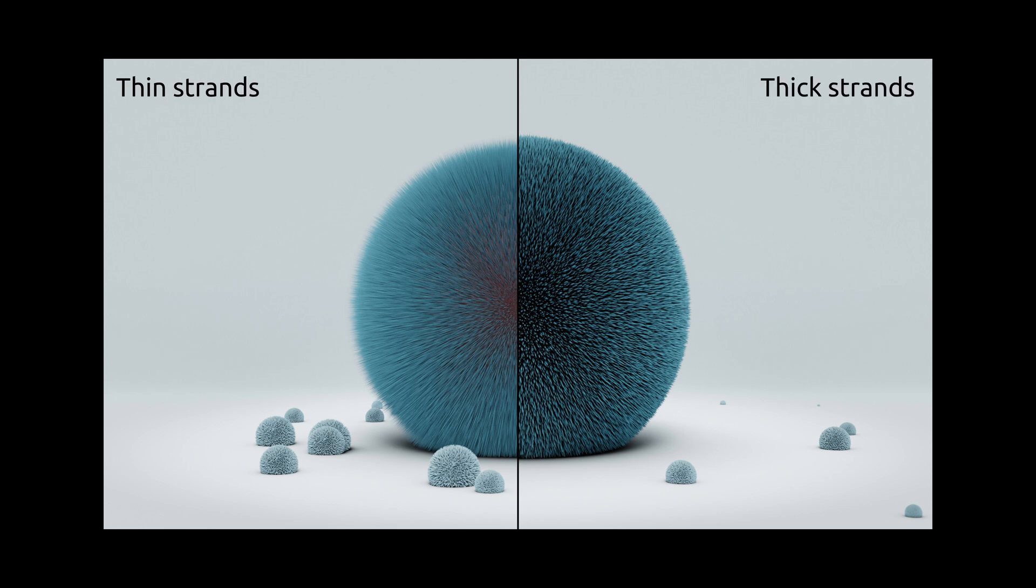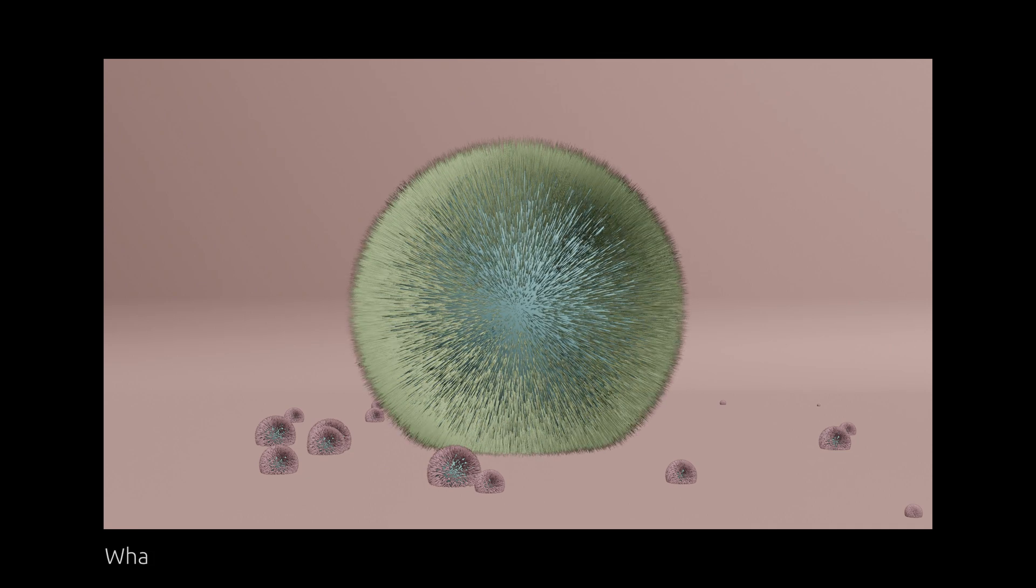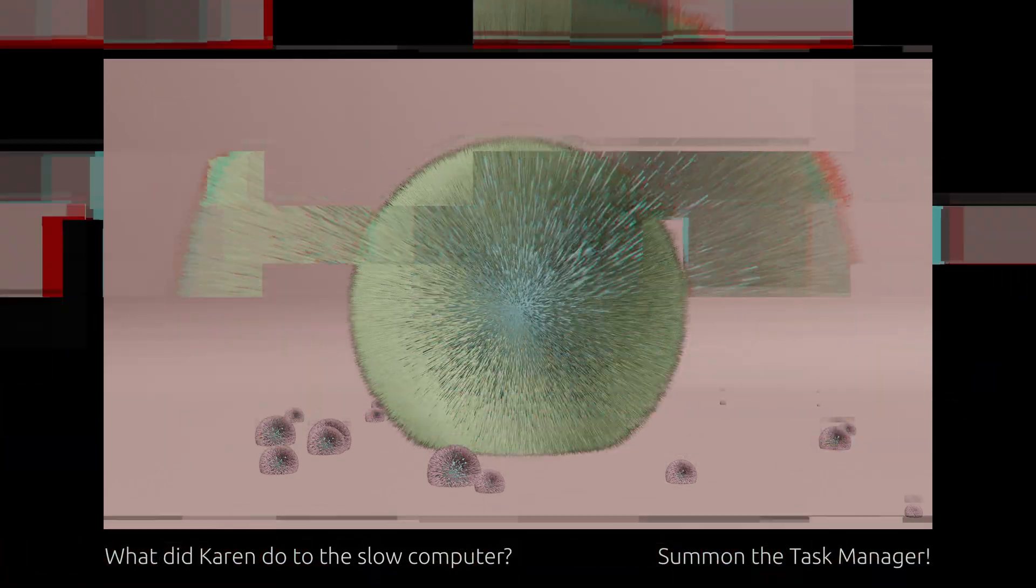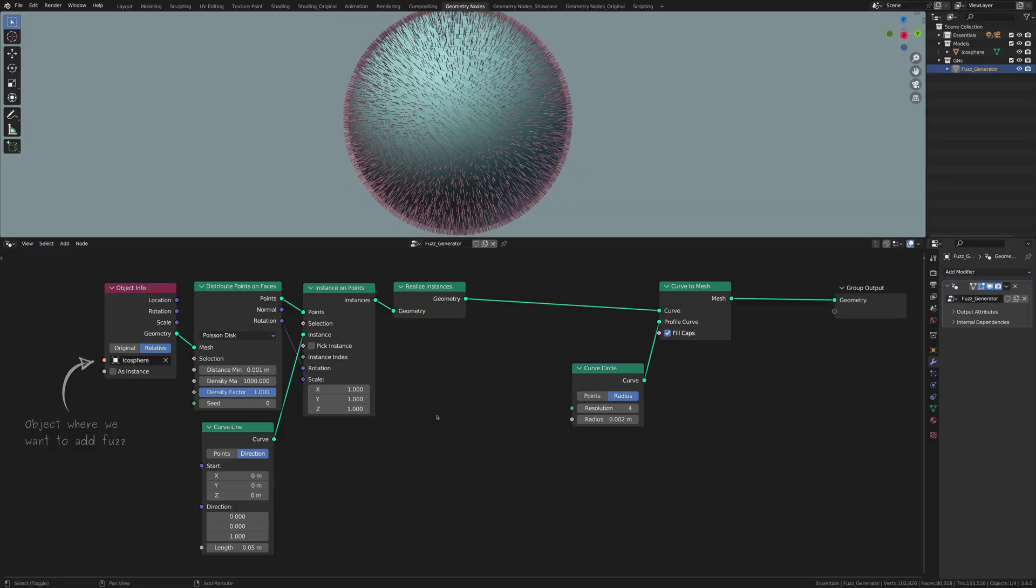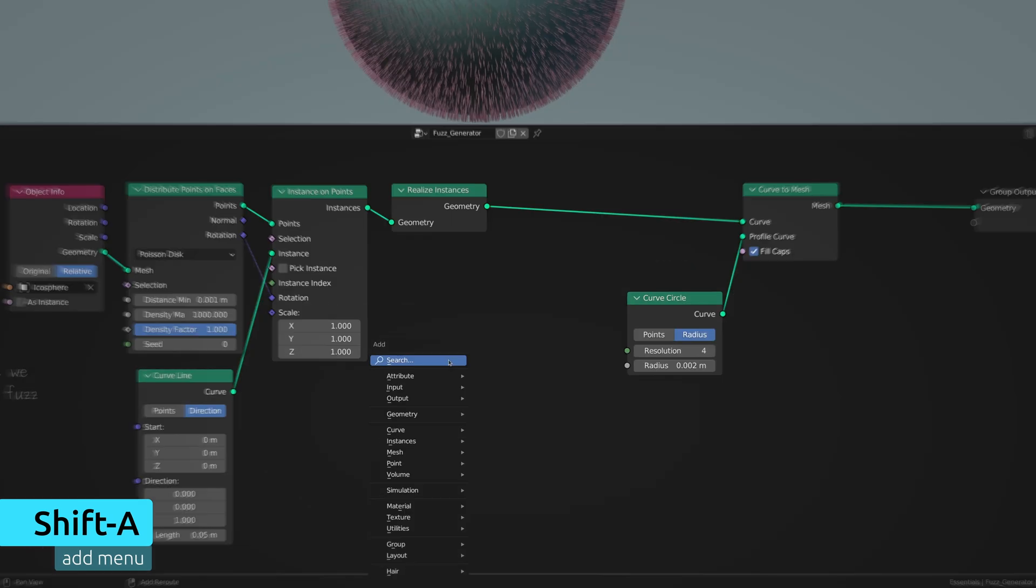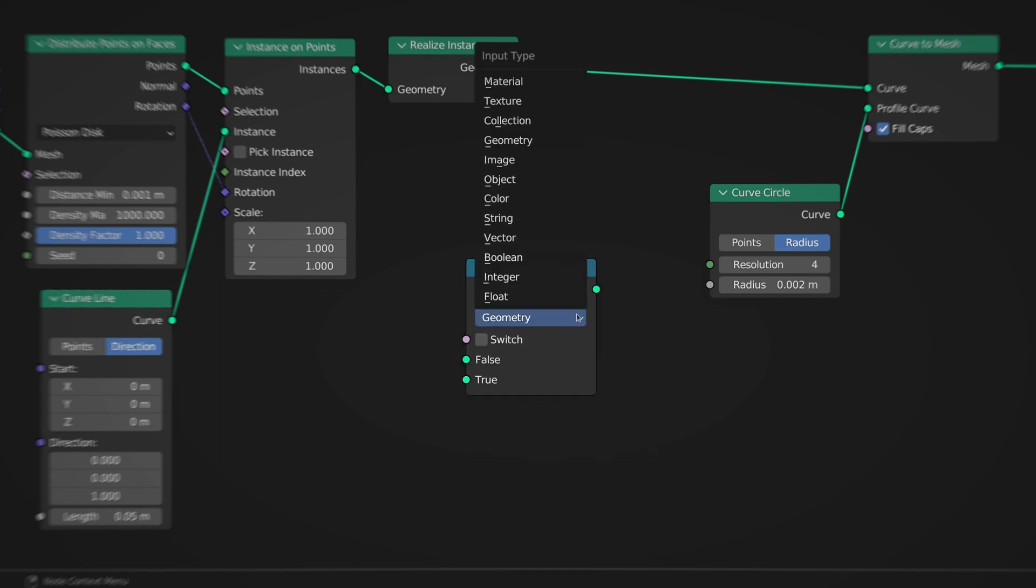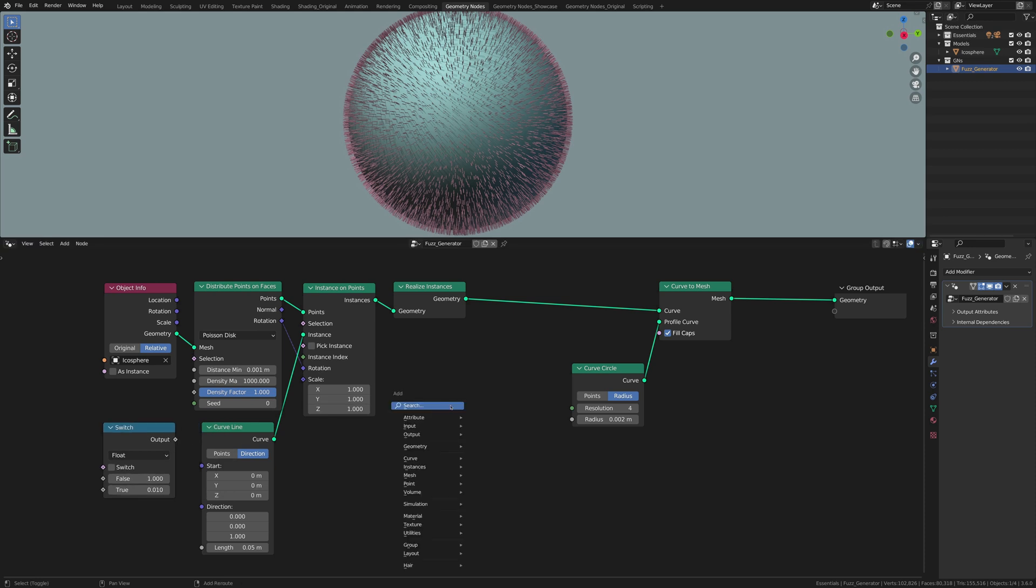But we have a problem here. That is, if we want to increase the number of strands, at some point Blender will start to lag, which I'm sure I don't have to tell you, is an extremely unpleasant experience. So to avoid this, let's press shift A to bring up the add menu and using the search field, find a node by the name switch and a conditional node called is viewport.